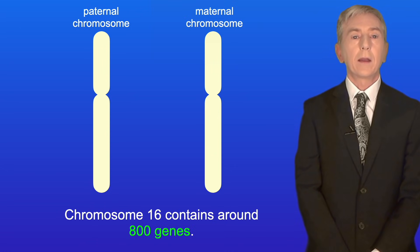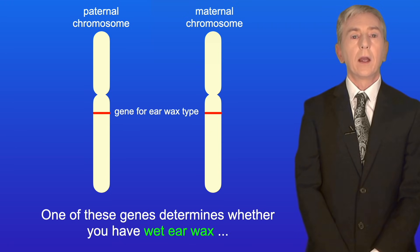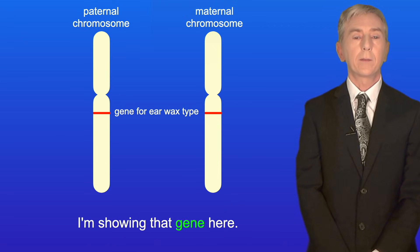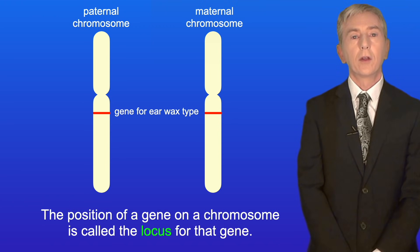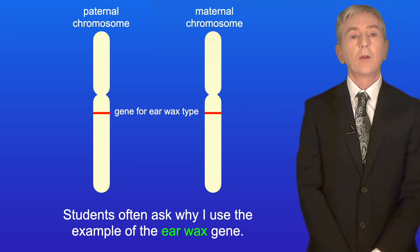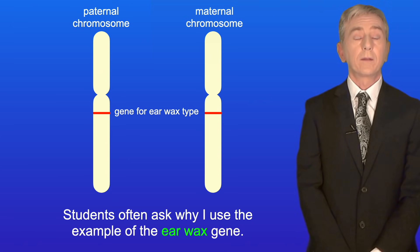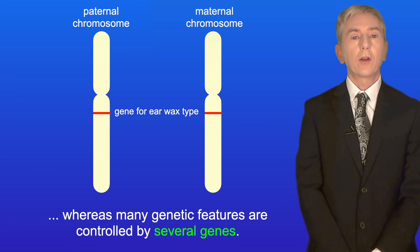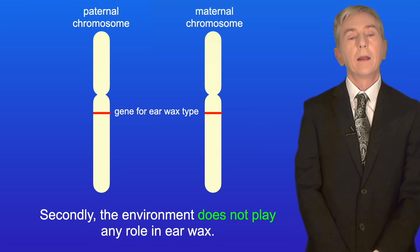Chromosome 16 contains around 800 genes and one of these genes determines whether you have wet earwax or dry earwax. I'm showing that gene here. The position of a gene on a chromosome is called the locus for that gene. Earwax is a good example because it is controlled by a single gene, whereas many genetic features are controlled by several genes. Secondly, the environment does not play any role in earwax.